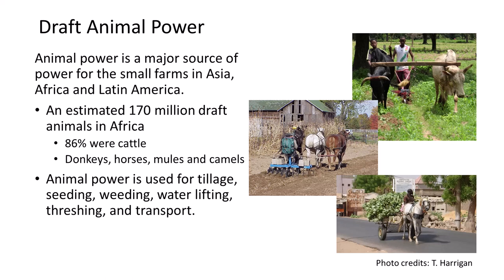Draft animals provide tractive power to till the soil, transport firewood and water, and move crops from field to market. At the end of their lives, they provide meat, hides, and other byproducts for household use and income on about 250 million hectares of land in developing countries worldwide. Draft animals are a major power source on small farms in Asia, Africa, and Latin America. The French Agricultural Research Center estimated about 170 million African draft animals, of which about 86% were cattle, in addition to donkeys, horses, mules, and camels.